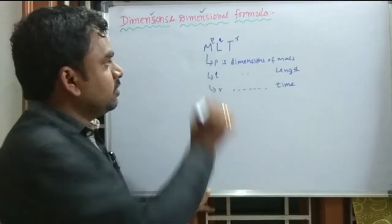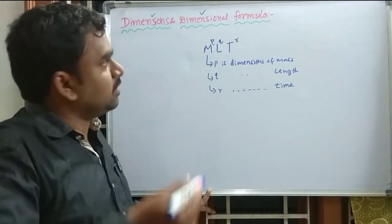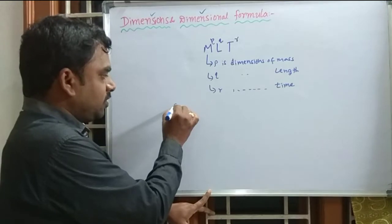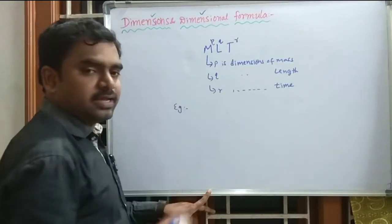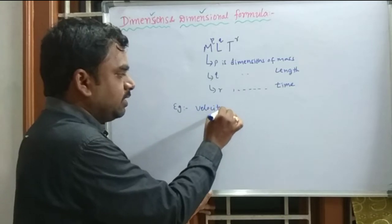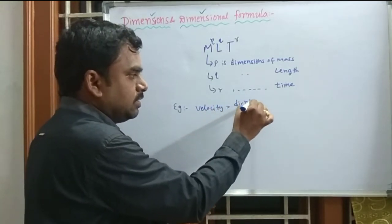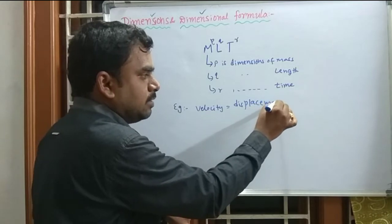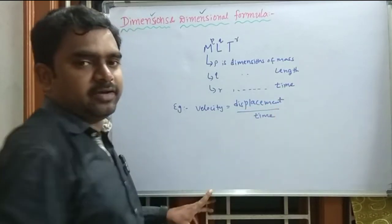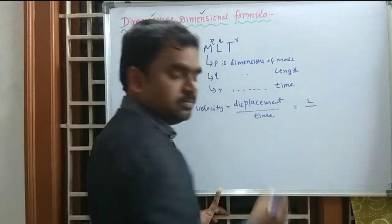Now we have to derive dimensional formulas for some physical quantities. For example, let us take velocity. Velocity is displacement divided by time. Displacement is one kind of length, so we represent it with L.